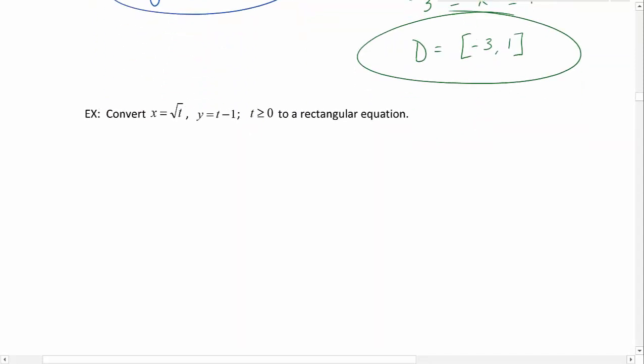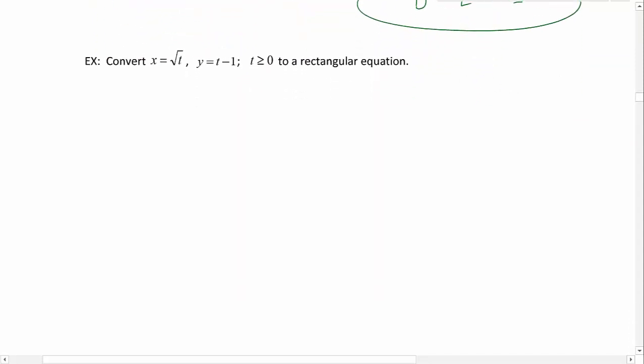Let's try another one. Let's convert x equals the square root of t, y equals t minus 1, to a rectangular equation where t is greater than or equal to 0.